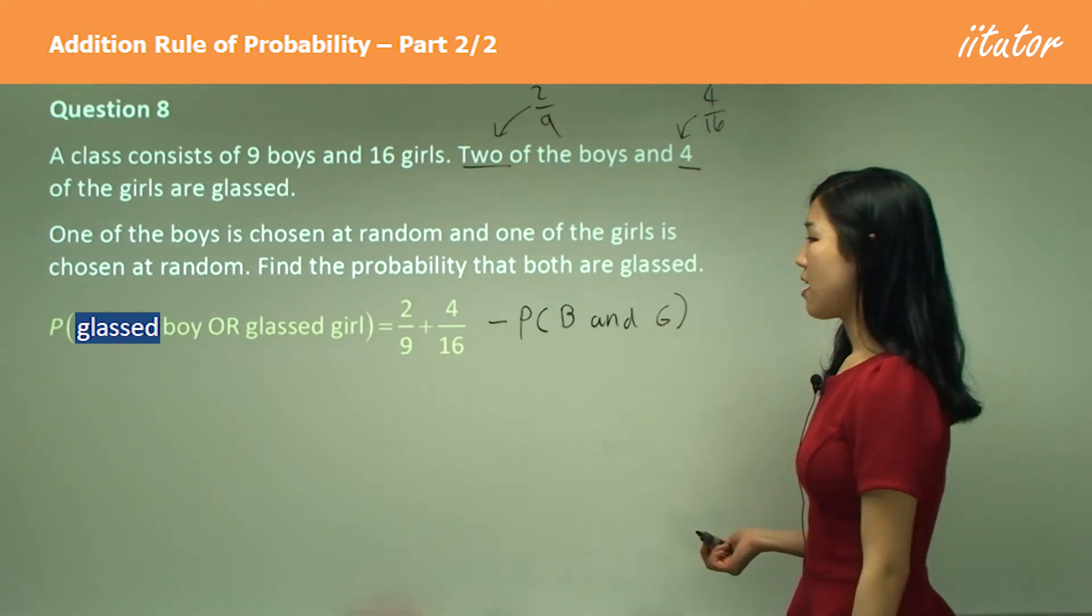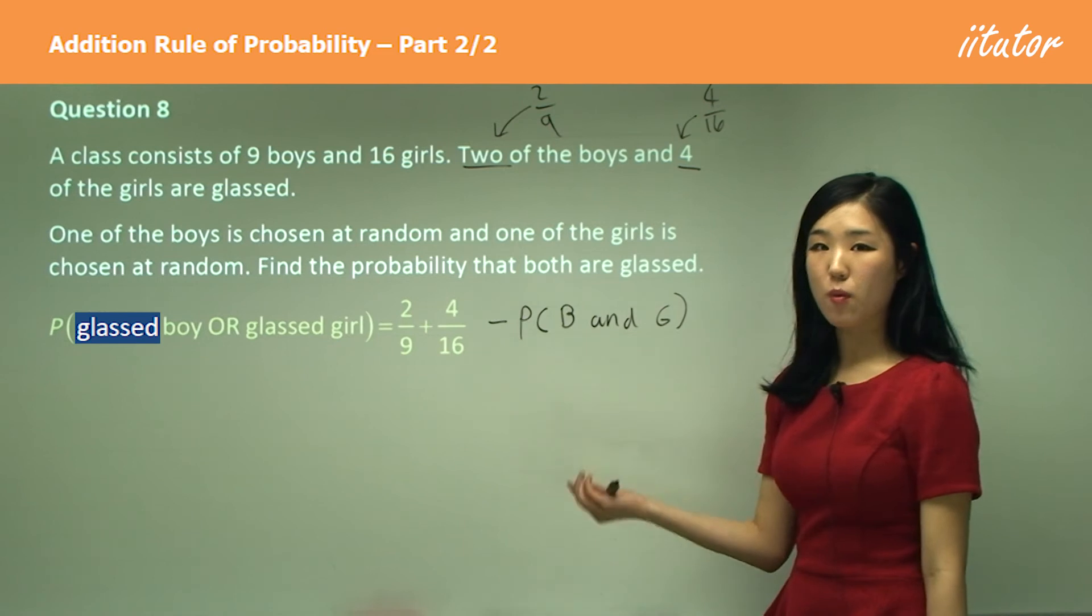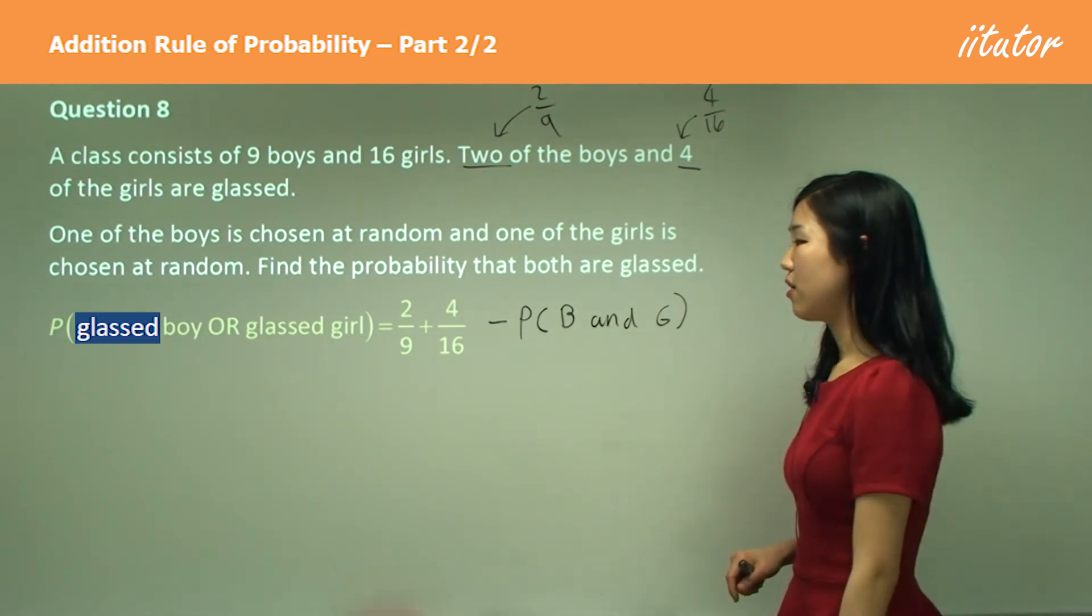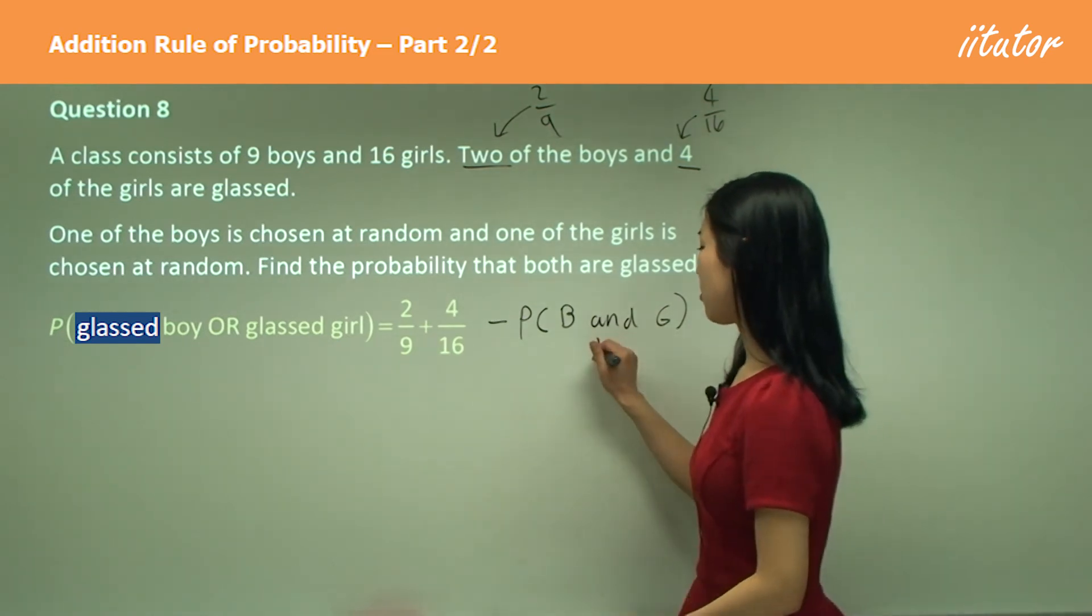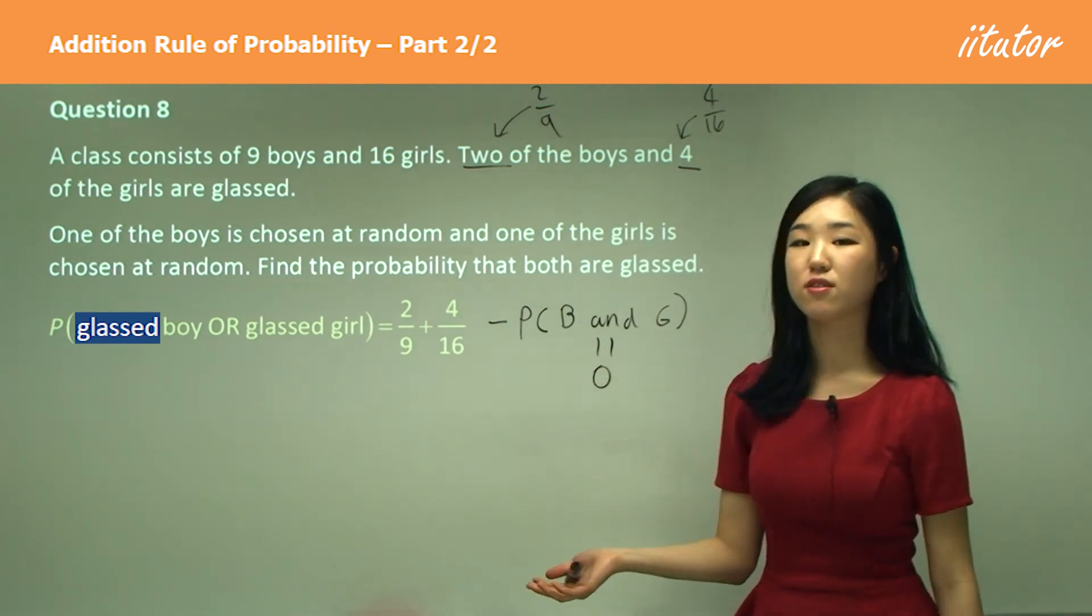Okay, so it's either the boy glassed or the girl glassed. They're independent events. So therefore, we can't have them together. That's why they're independent of each other. So that's why we don't consider this. This is just zero. It's like another mutually exclusive event.